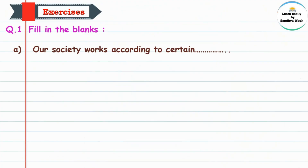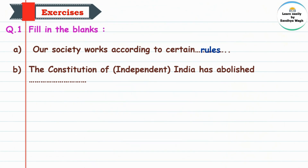Our society works according to certain rules. Second, the constitution of independent India has abolished — 'constitution' means Rajyaghatan, 'independent' means Swatantra — the constitution ne kai nahise kele ahe. 'Abolished' manje nahise karne. Answer: untouchability.